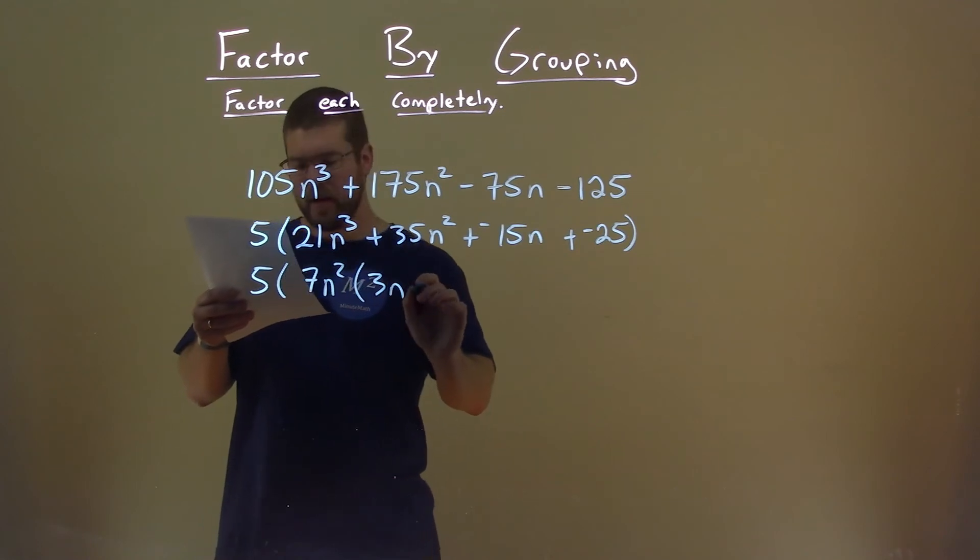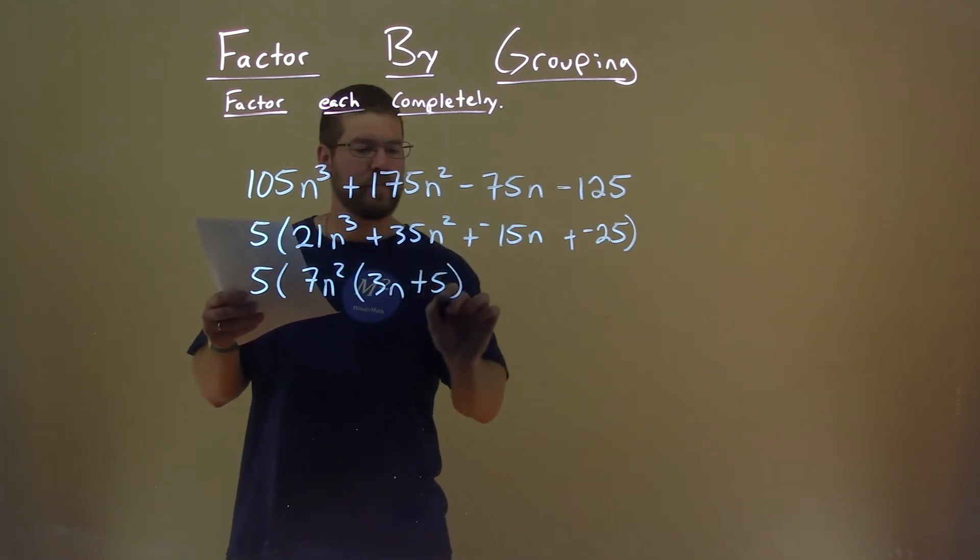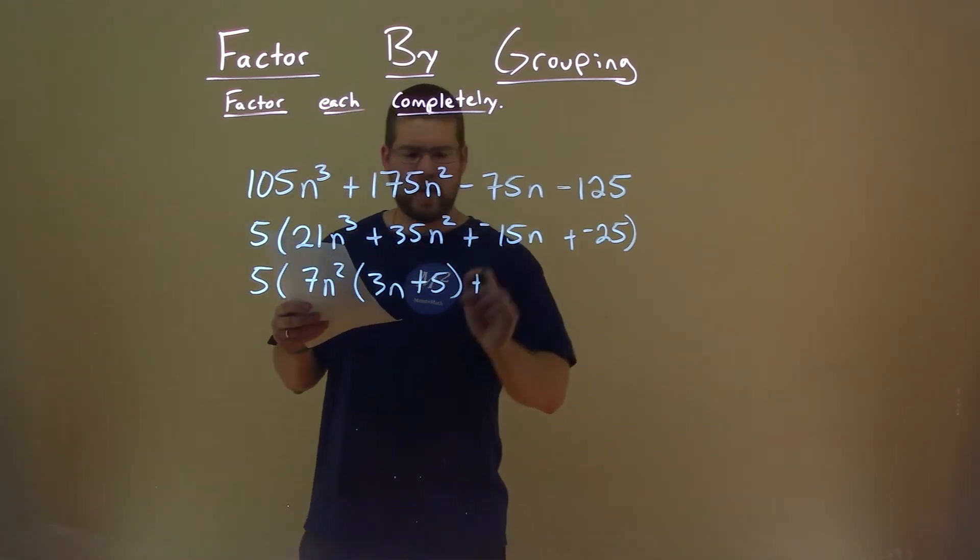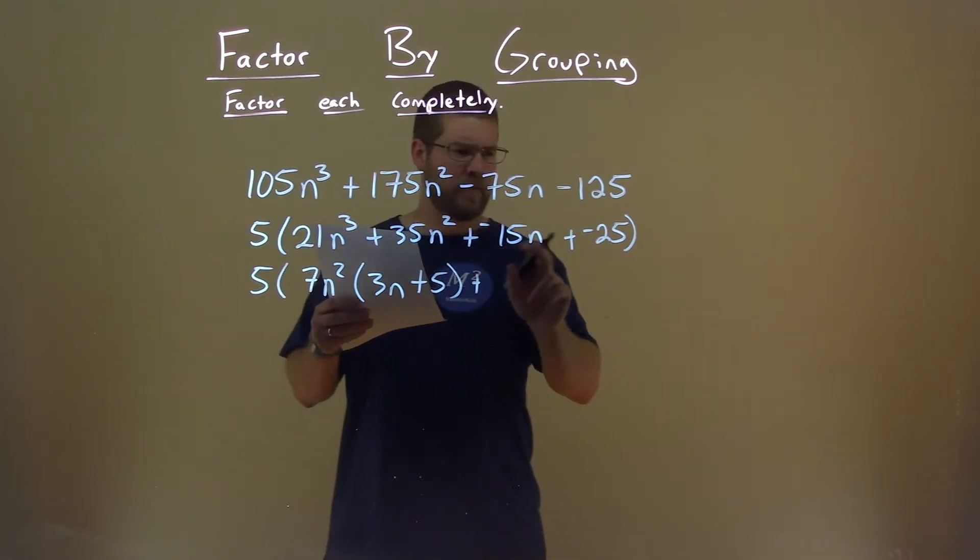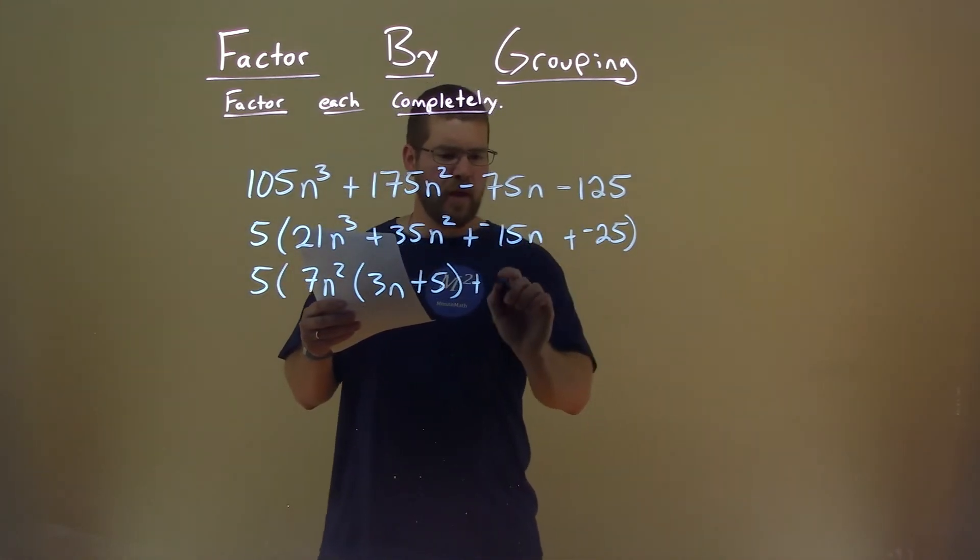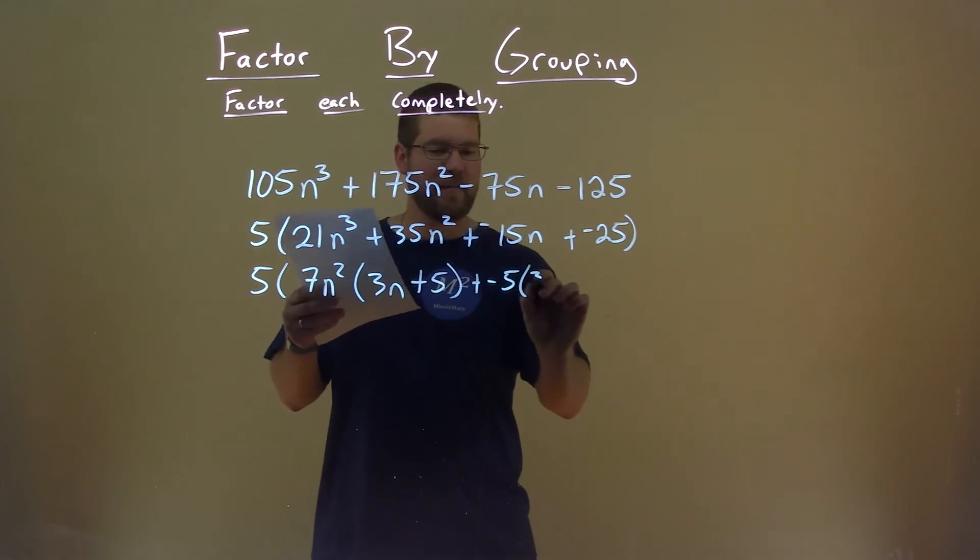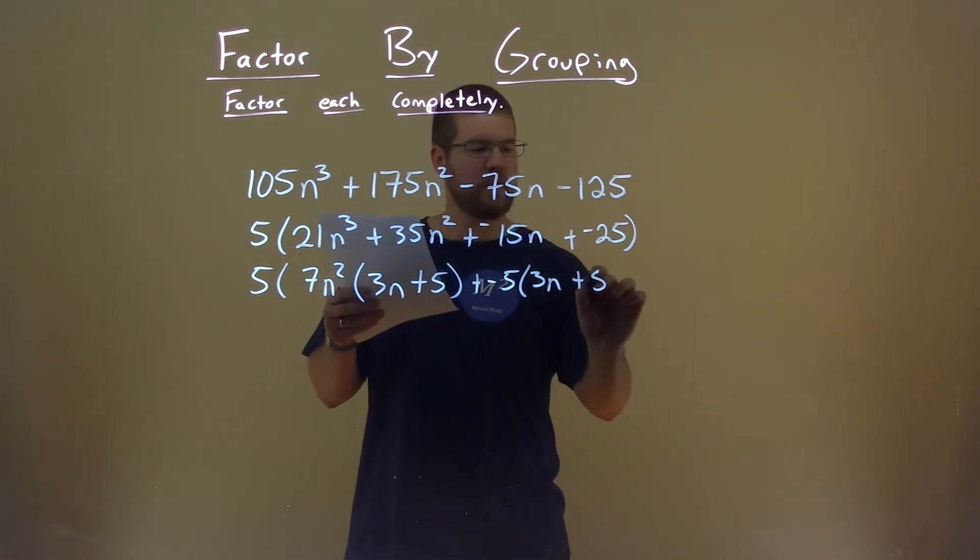So now let's go deal with the second part here. Negative 5 is in both parts right here. Pull out a negative 5, and what are we left with? Again, a 3n + 5.